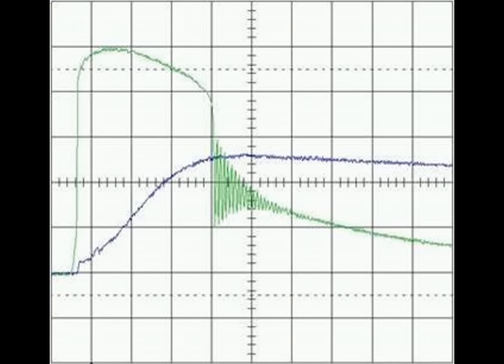The benefits of series filters over shunt protectors can be seen in these oscilloscope waveforms which show the typical let-through voltage for both a shunt and series protector when subjected to a standard current impulse.